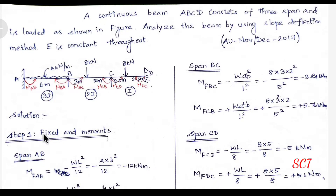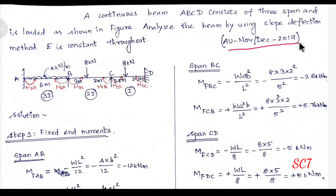Hello friends. Next is the slope deflection method. This is an intermediate support problem that comes every year. Now let's see - NNA University, November December 2017. The continuous beam ABCD consists of 3 spans loaded as shown in the figure. Analyze the beam using the slope deflection method. E is constant throughout.